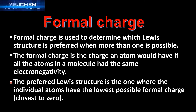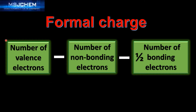The preferred Lewis structure is the one where the individual atoms have the lowest possible formal charge, that is the formal charge closest to zero. Next we look at how to calculate the formal charge of an atom.